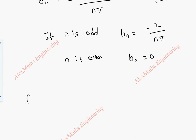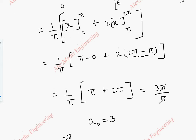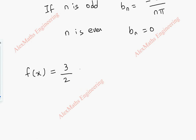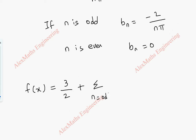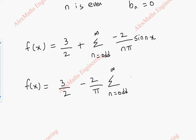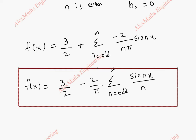Substituting all results into the Fourier series formula: the a₀/2 term gives 3/2. Since aₙ = 0, there is no cosine term. The bₙ term contributes only for odd n, giving −2/(nπ). Taking the constant outside the summation, the final Fourier series is: f(x) = 3/2 − (2/π) · Σ [sin(nx)/n] for n odd, n = 1 to ∞.